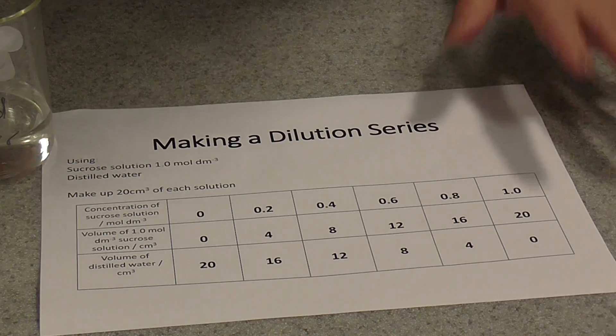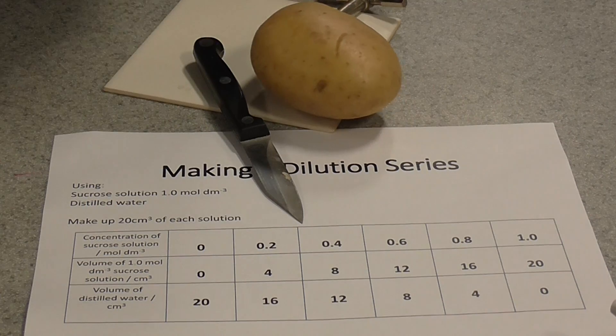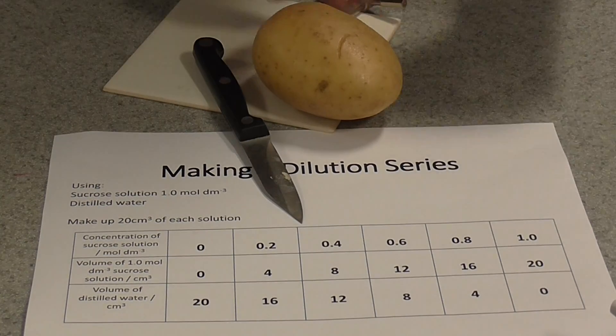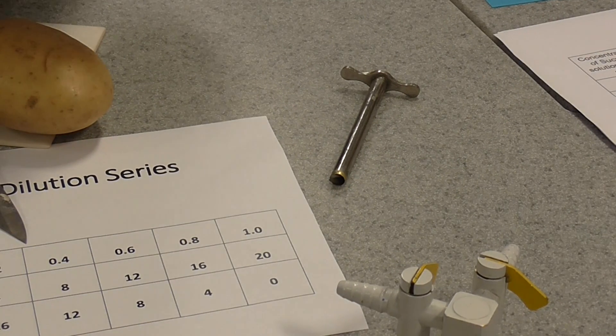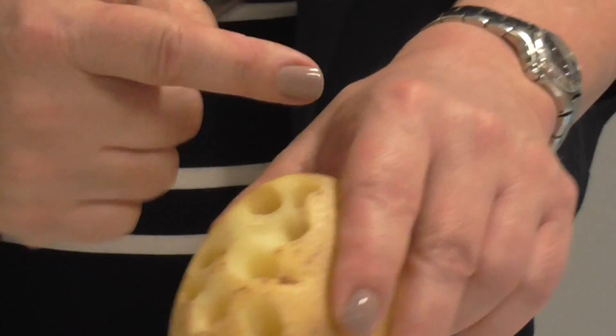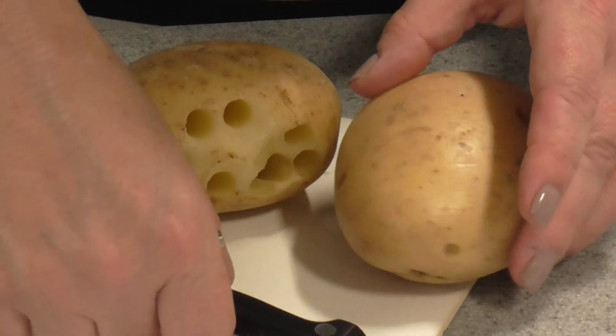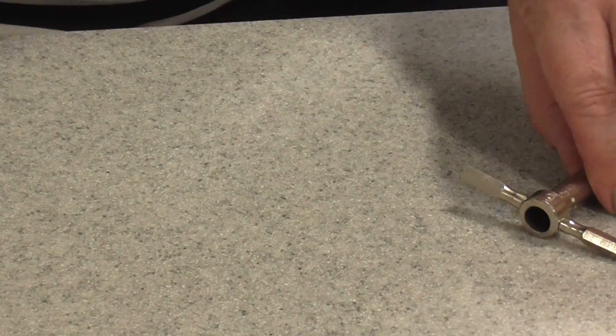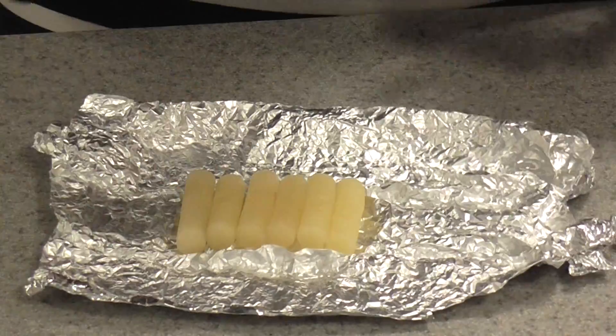Now while they are equilibrating, we're going to prepare some small chips of potato. The best way to do this is to use a number six cork borer, and we can cut little cylinders of potato tissue. You can use a chipper if you like - a chipper's better if you're making a large number for a large class. Make yourself some little cylinders of plant tissue and cut them all to a very similar size. I've already prepared these earlier and wrapped them in foil so they don't dry out. There they are, that's what they should look like.